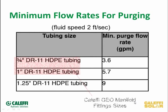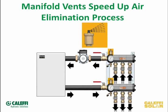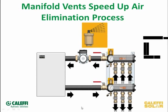Those are the two sizes available on our manifold — three-quarter and one-inch GeoGrip fittings. Here's a nice schematic of what it would look like: your heat pump over here, your pump assembly, and your manifold tied right into that — all in one clean package with air elimination, isolation, and temperature gauges to monitor what's going on in the system.